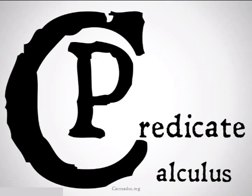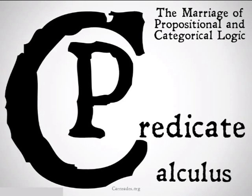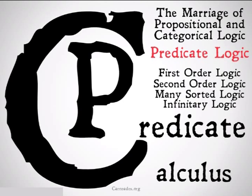Predicate calculus is, as we've said before, the marriage of propositional logic and categorical logic. Basically what we're going to be doing is taking those categorical statements, those categorical syllogisms we've just learned about, and converting them into a form that we can use the rules of propositional logic on. Predicate calculus is also known as predicate logic, which encompasses first-order, second-order, many-sorted, and infinitary logic.